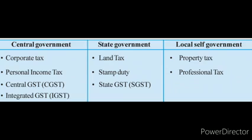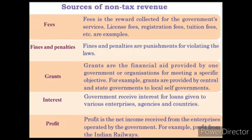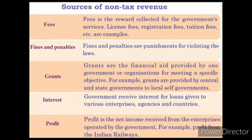A table gives the details of taxes imposed by central, state, and local self-governments. Thus we have discussed the sources of income from tax. Now let's turn to non-tax revenue. There are five different kinds of non-tax revenues: fees, fines and penalties, grants, interest, and profit.